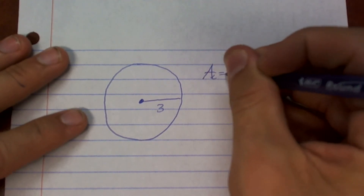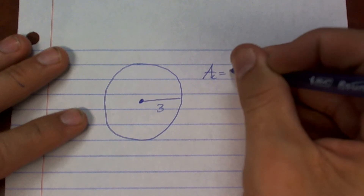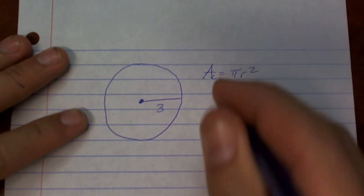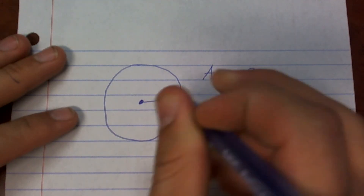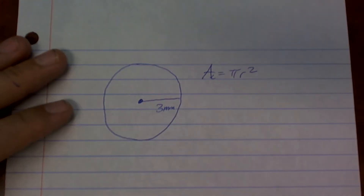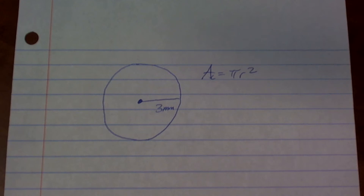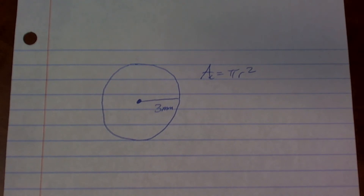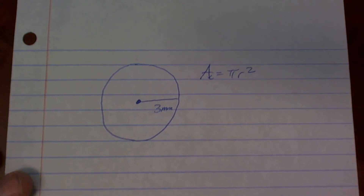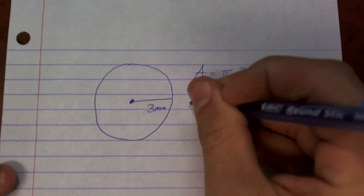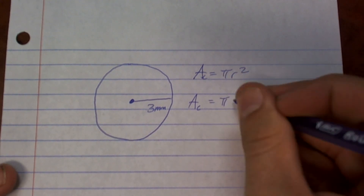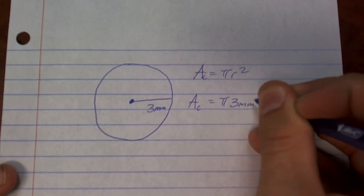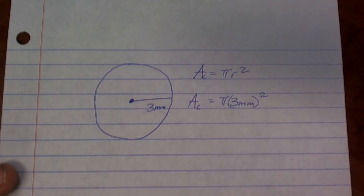So our area of our circle equals pi r squared. It says it's going to be 3 millimeters — what is the area of the green sticker below with a radius of 3 millimeters? So I'm just going to keep mine in terms of pi. My area of my circle equals pi times 3 millimeters squared.